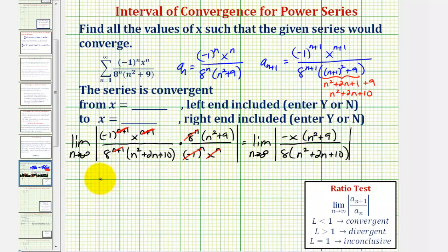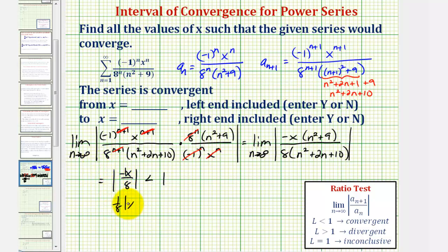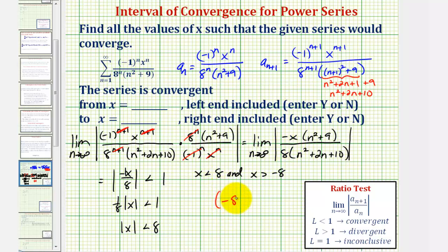Because the degrees are the same, as n approaches infinity this limit approaches the ratio of leading coefficients. So this limit equals the absolute value of negative x over eight. For the series to converge, this must be less than one. Solving the absolute value inequality: one-eighth times the absolute value of x is less than one, so the absolute value of x is less than eight, meaning x is between negative eight and positive eight. The open interval of convergence is from negative eight to positive eight.